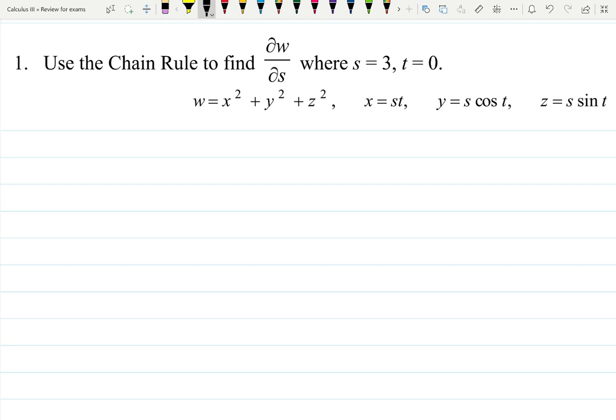Here they ask you to use the chain rule to find the derivative of W with respect to S at the point S equals 3, T equals 0. But W depends on X, Y, and Z, and X, Y, and Z depend on S and T.